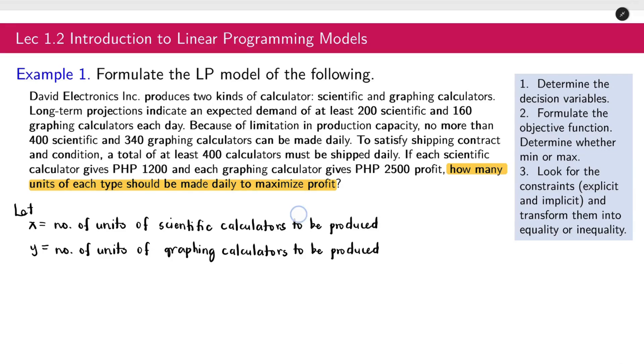Take note that the decision variables must be stated like this. You must be specific. If you say let x be the number of units of scientific calculators, just like that, this is wrong. You should be stating the complete thought. The number of units to be produced. So x and y, this number of units, is not yet produced. We are trying to do a decision basis. So that's why we have to be produced here. It must be included.